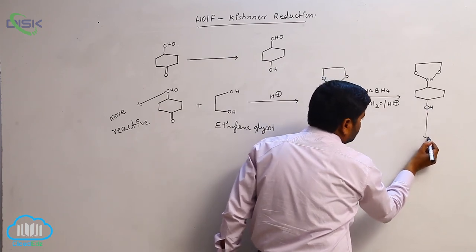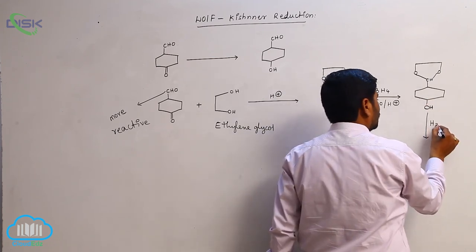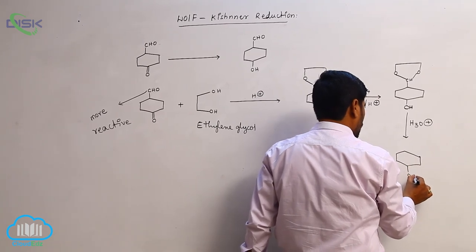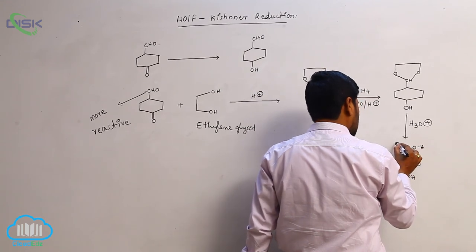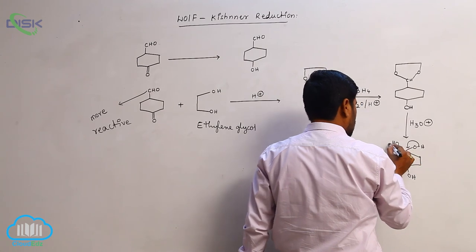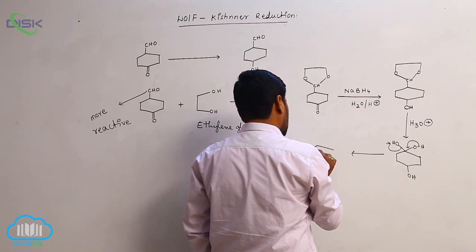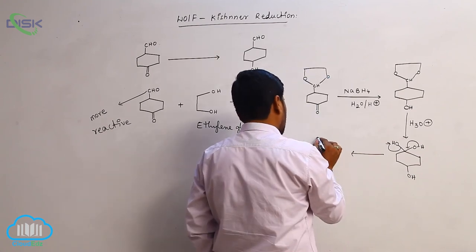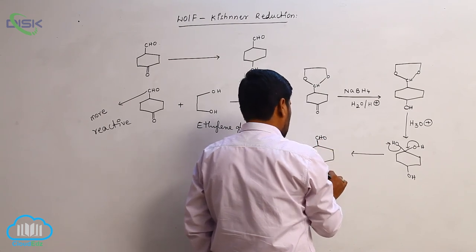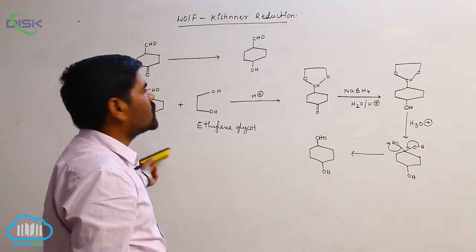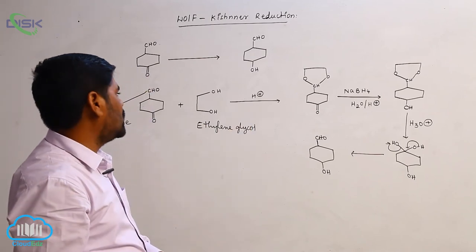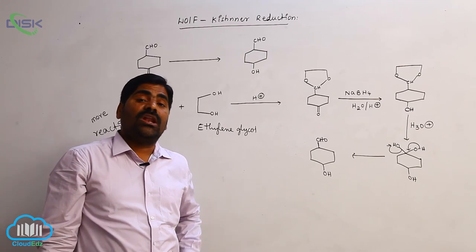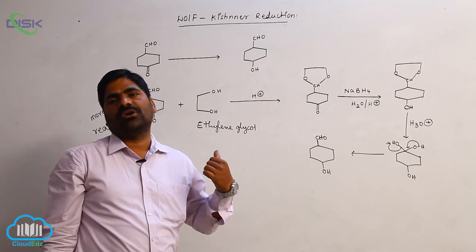Hydrolysis of the acetal always gives a geminal diol (two OH groups on the same carbon), which is unstable. Loss of water takes place, converting it back to the aldehyde group. The final product contains an OH from the reduced ketone and the regenerated aldehyde — this is the selective synthesis using a reducing agent combined with a protecting group strategy.